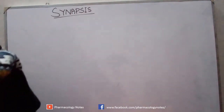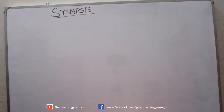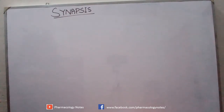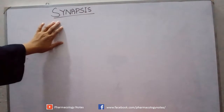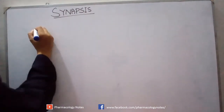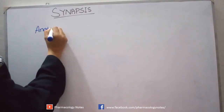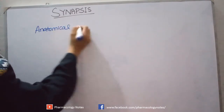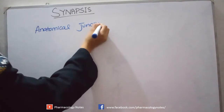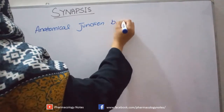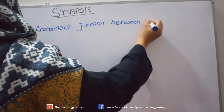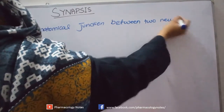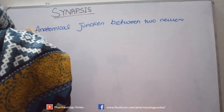Do you know what is a synapse? When any neuron wants to communicate with another neuron, or the signaling between neuron to neuron or neuron to effector cells occurs through a gap, through a junction — that is termed as synapses. So a synapse is an anatomical junction between two neurons.